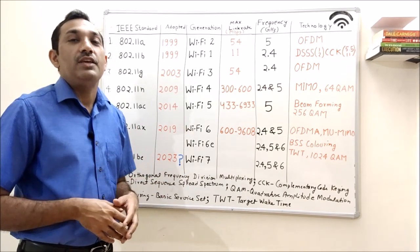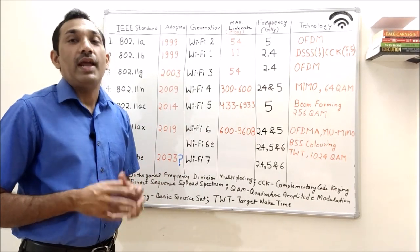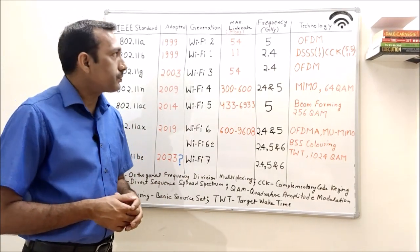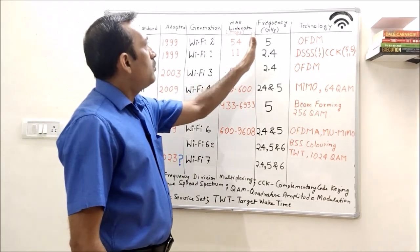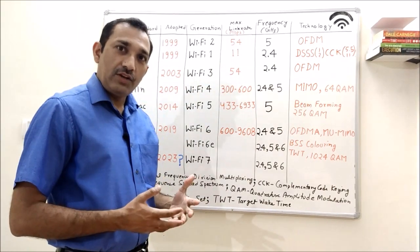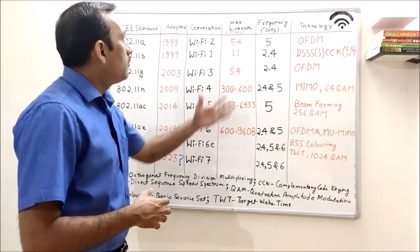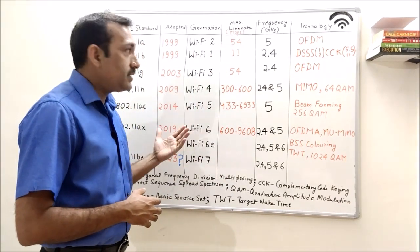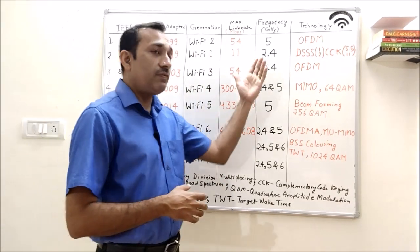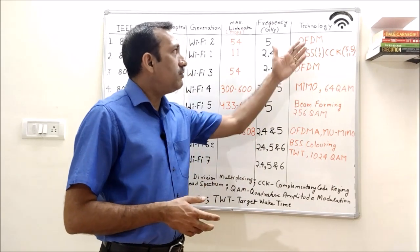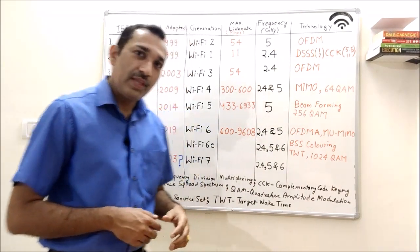It is going to be very useful and easy for end users to remember. Then we will look at the max link rate or data throughput of the different standards, what frequency they are operating on, and what are the major technologies.